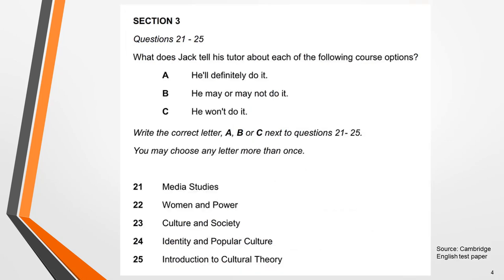In this second example, you're given a list of course options 21 to 25 and the list of choices the student could make about whether or not he will take the course. You must listen to the recording and identify the decisions the student makes about each course.